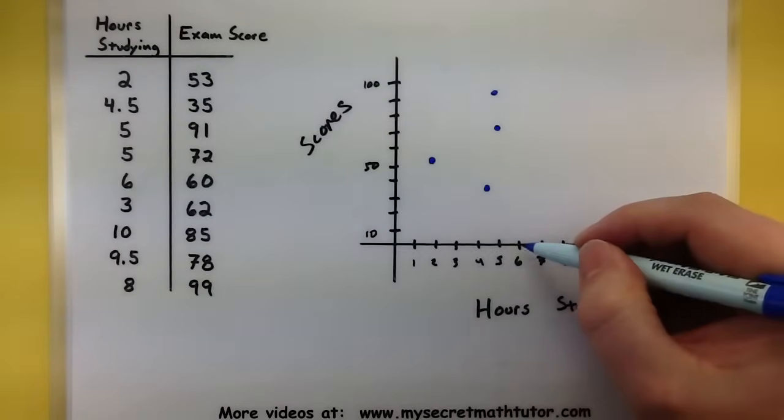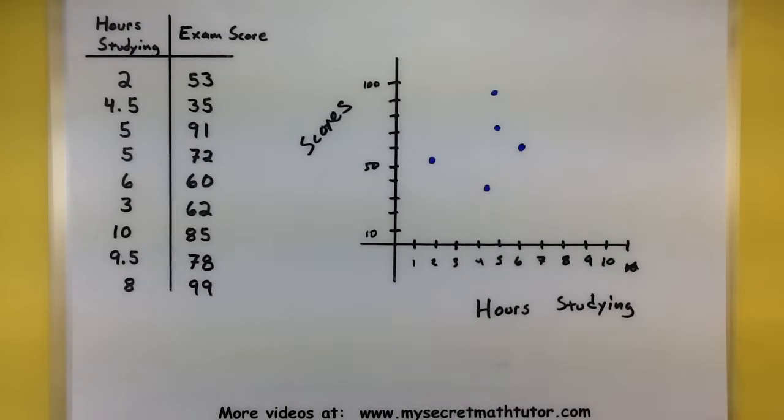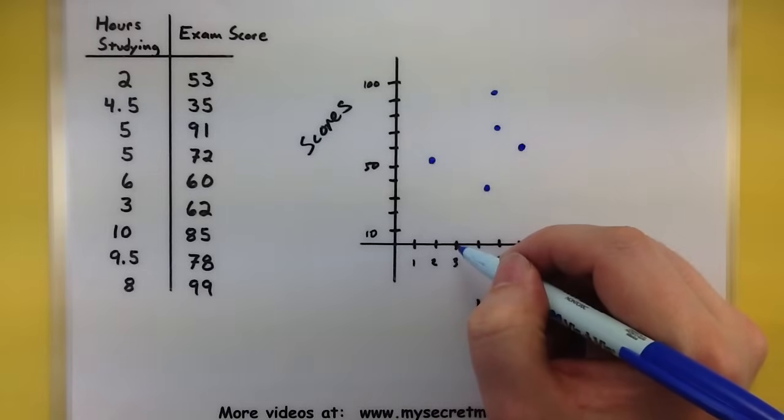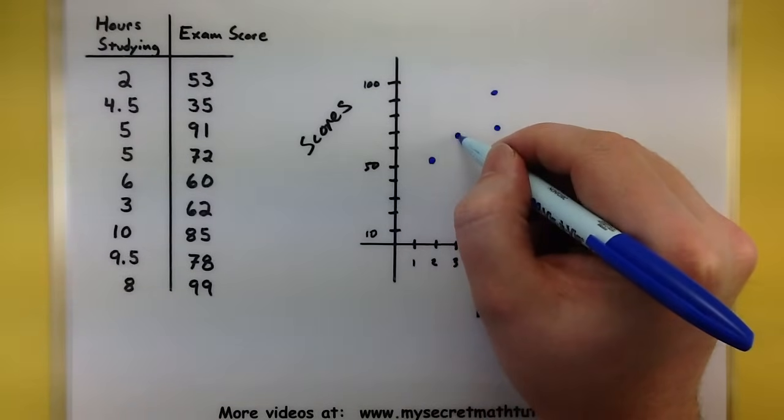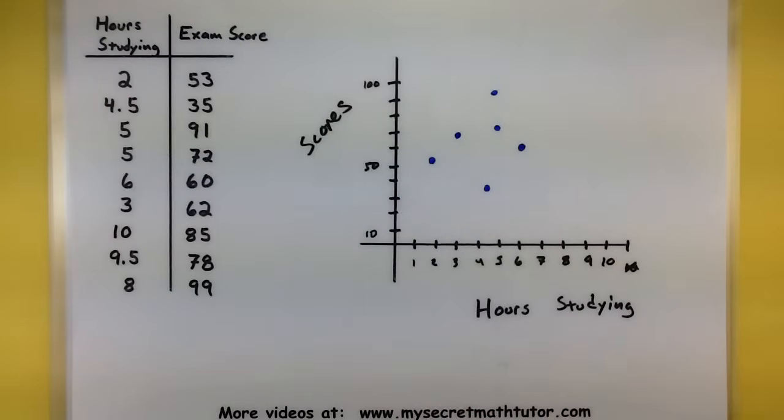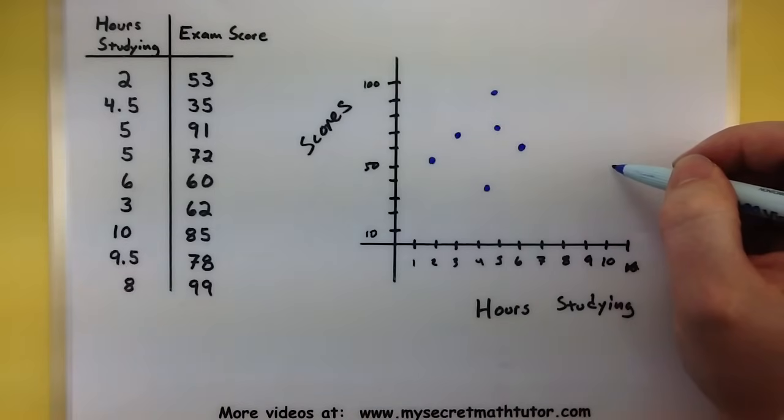Let's see. 6. We need a dot at 60. 3. We need one at 62. Let's see. 10. Over here. We need one at 85.